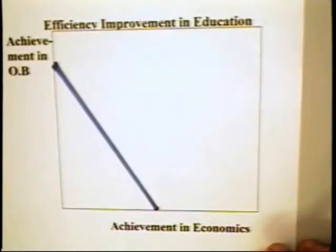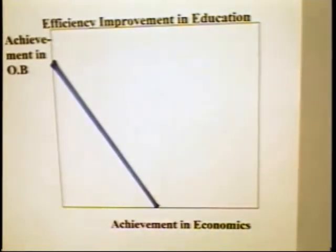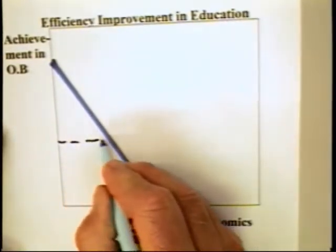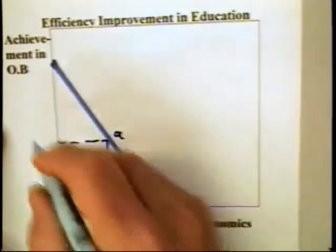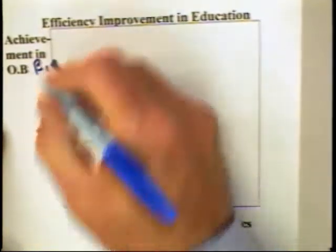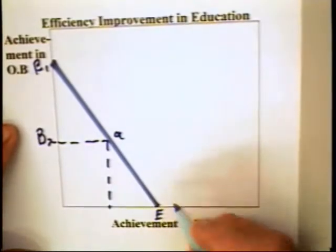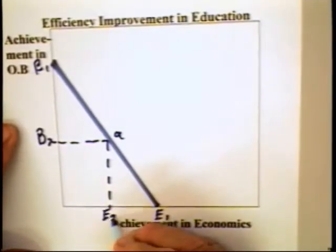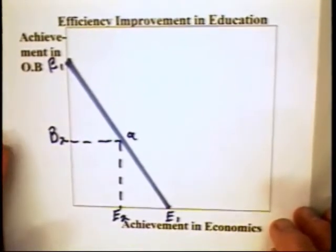Now let's go back to the curve, and again we use a straight line for simplicity. Let's assume that the individual chooses combination A on this graph. That is, the individual learns B2 of organizational behavior and E2 of economics, given the technology that's available in the classroom.